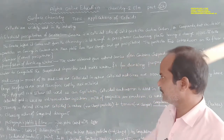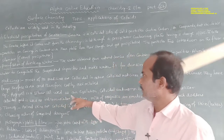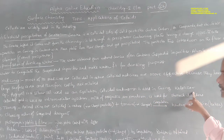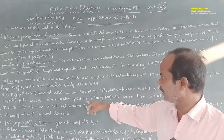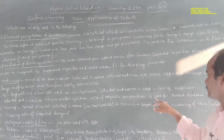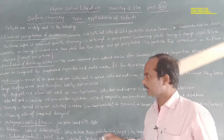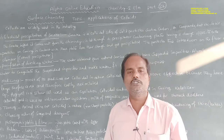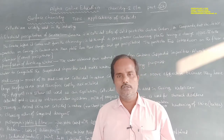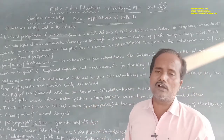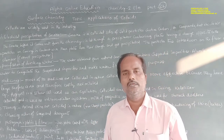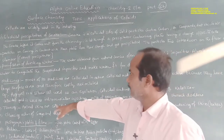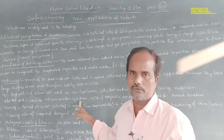Examples of colloidal medicines include: Argyrol, a silver sol used as eye lotion; colloidal antimony, used in curing kala-azar; colloidal gold, used as intramuscular injection; and milk of magnesia, which is magnesium hydroxide, an emulsion used for stomach disorders.